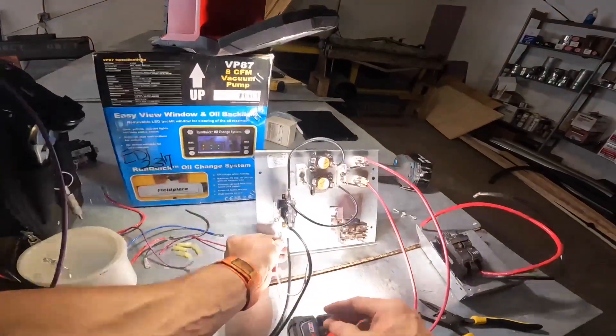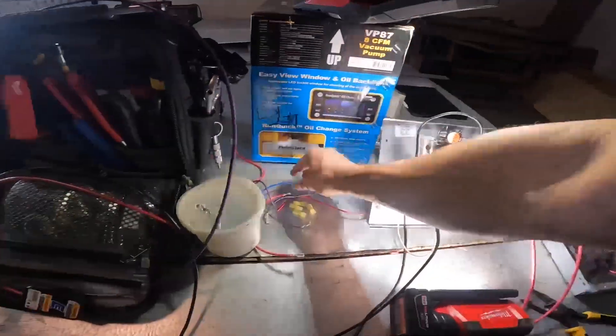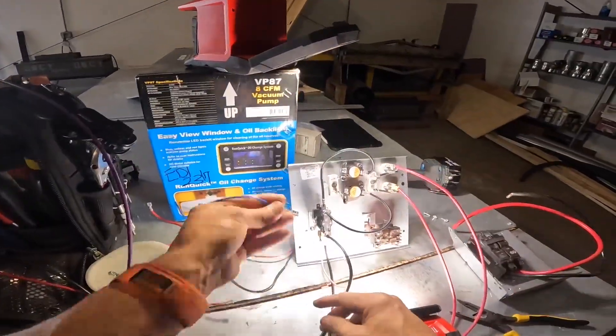Heat strips normally energize with white so we're putting white on the bottom here and we're going to use blue as common.